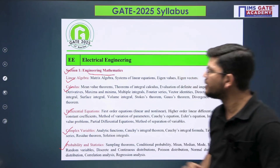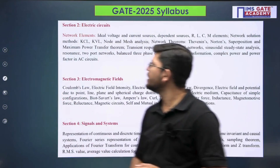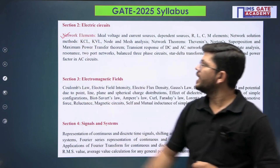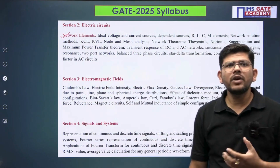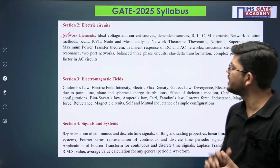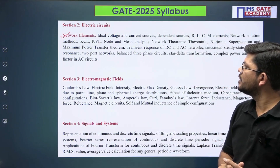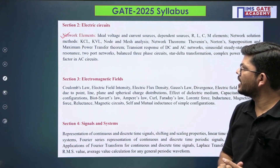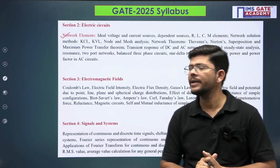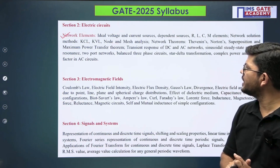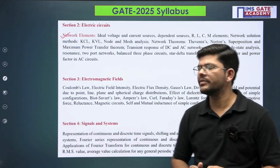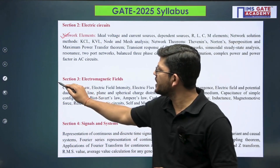In section 2, we have Network Analysis. You have to cover basic concepts of networks — DC transients, KVL, KCL, nodal analysis, and different electrical circuit theorems. Then two-port networks, some concepts of three-phase circuits, and power factor as well. Then in section 3 we have Electromagnetic Field.